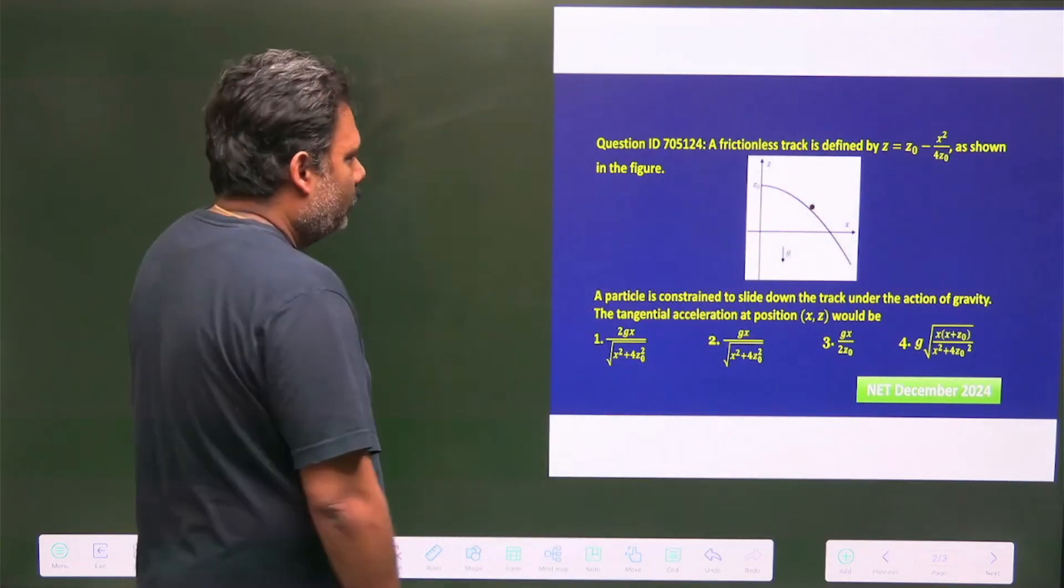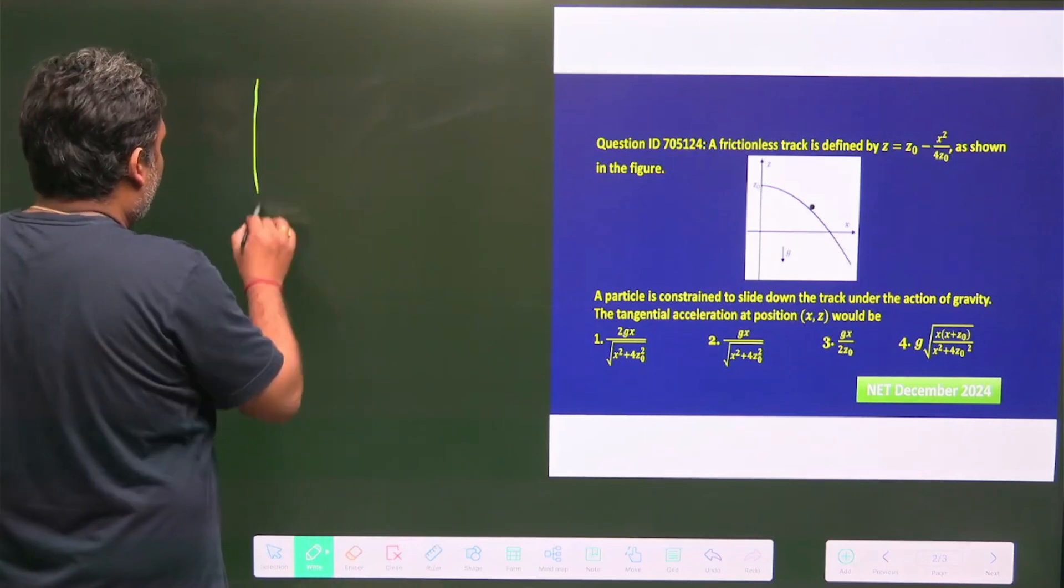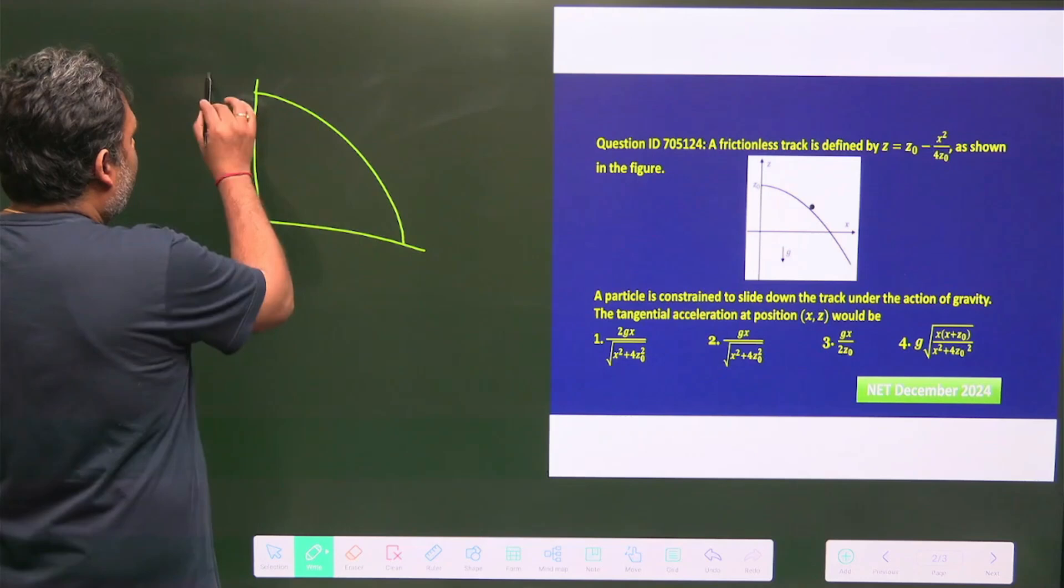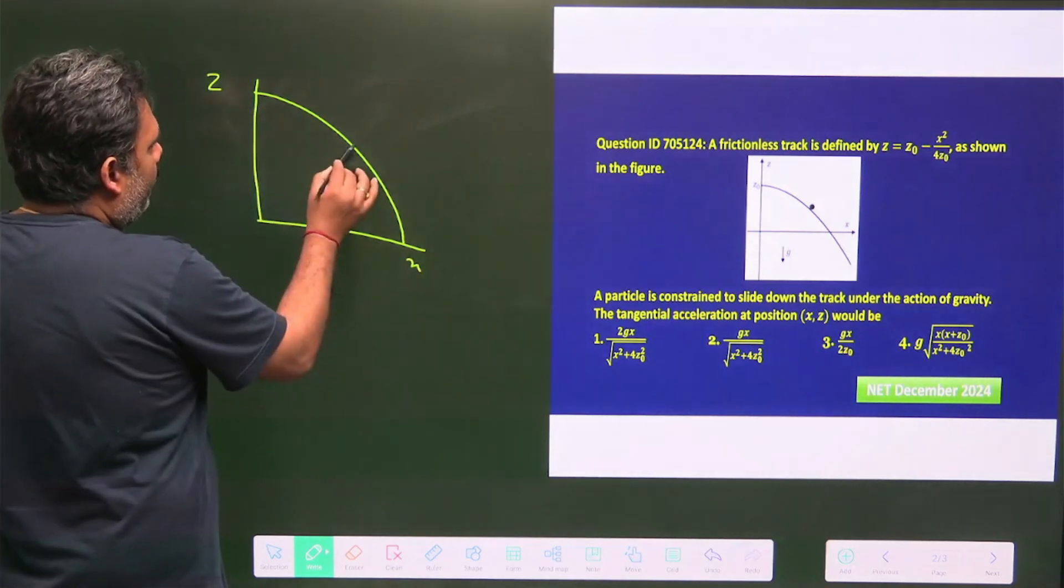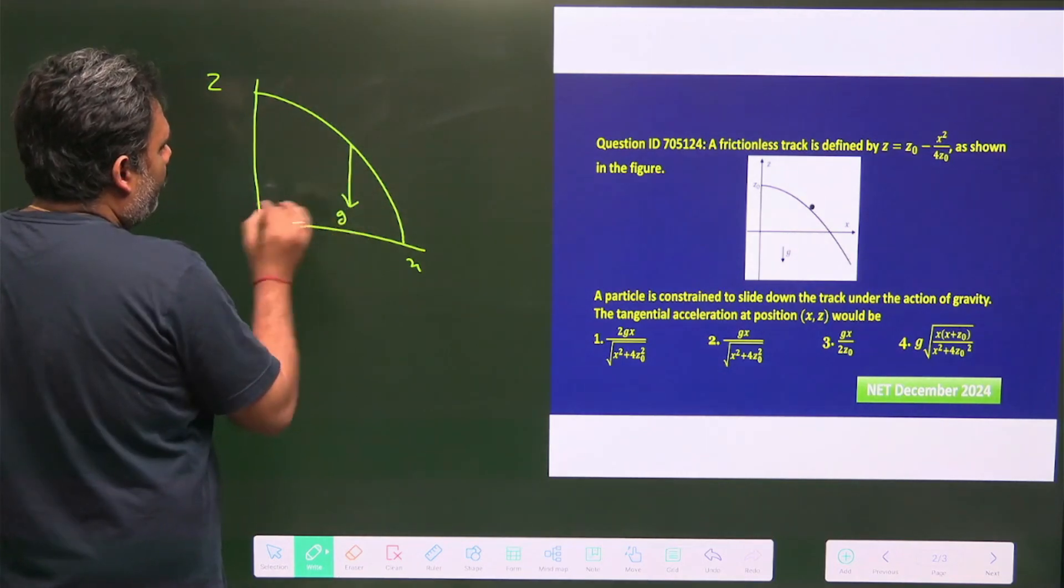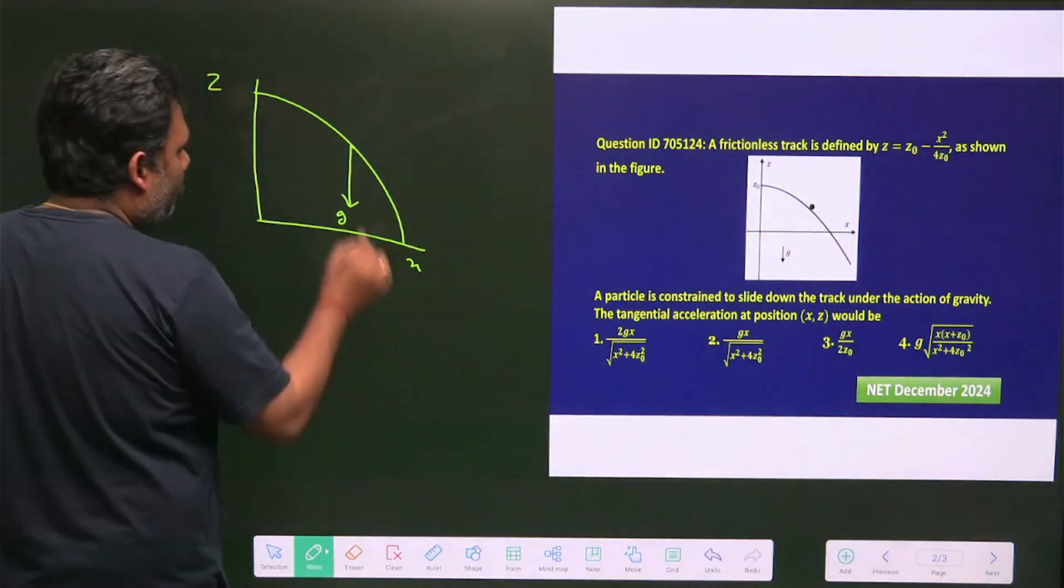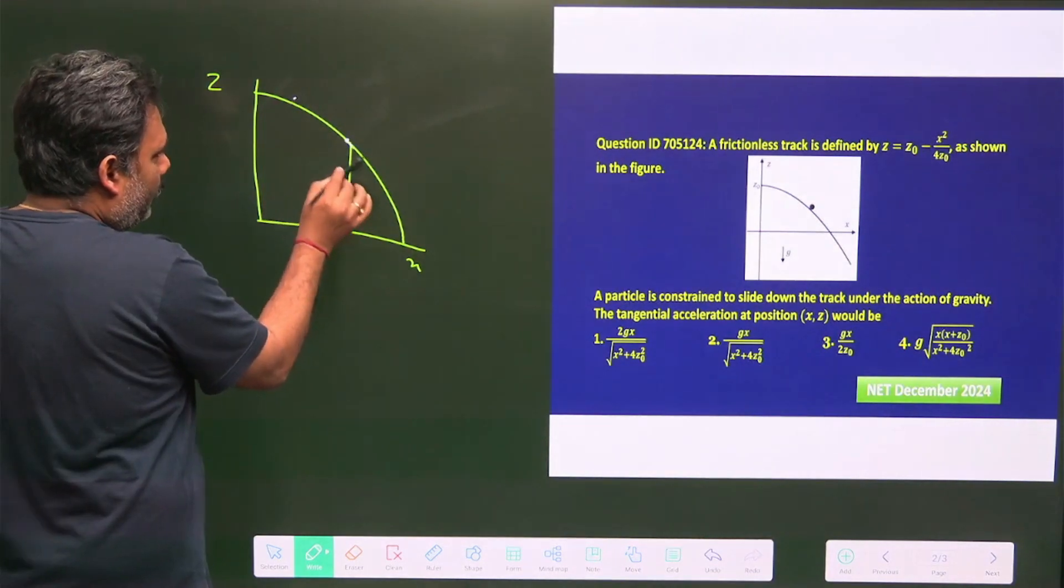So how we can approach it? If we can see this particular problem, this is your basically z direction, this is your x, and at any point this is your g. We can find the tangent, so we have to find the tangential direction. If you are putting the tangent, then this will be your tangent.